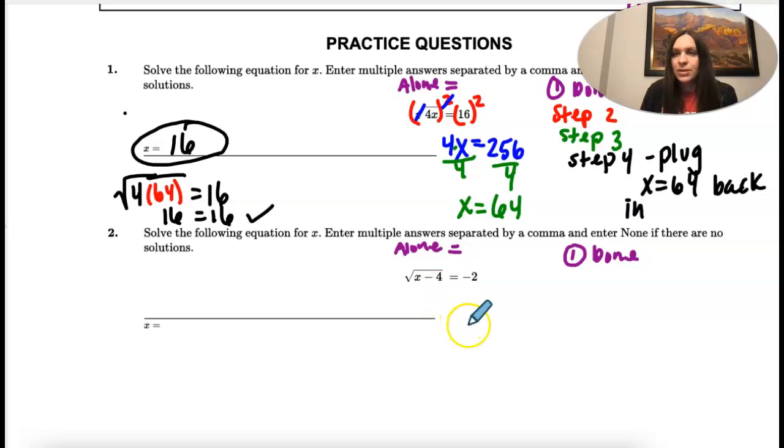Step two is square both sides. So I'm going to take this side and square it, and this side and square it. So again, what happens is the square and the radical are opposite operations, and we're just left with whatever's under the radical.